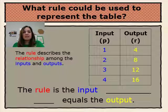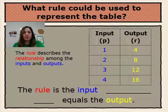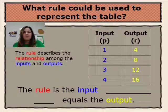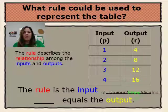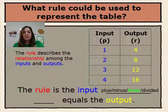We can use this sentence stem to describe the rule: the rule is the input, blank — where we want to put in the operation: adding, subtracting, multiplying, or dividing — blank, a number, equals output. The sentence stem for this table would read: the rule is the input times 4 equals the output.